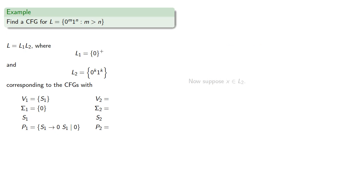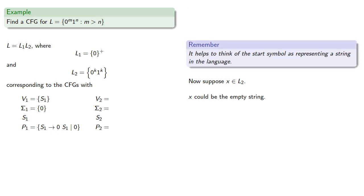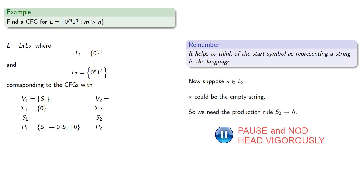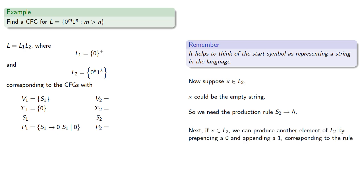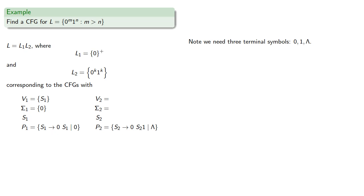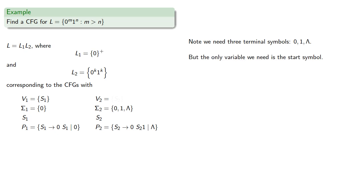Now suppose x is in our second language. x could be the empty string — we might have no zeros and no ones. It helps to think of our start symbol as representing a string in the language, so we need the production rule S2 produces the empty string. If x is in our language, we can produce another element by prepending a zero and appending a one, keeping the number of zeros and ones the same. This gives us the rule S2 produces 0 S2 1. This time we need three terminal symbols — zero, one, and the empty string — and the only variable we need is the start symbol.